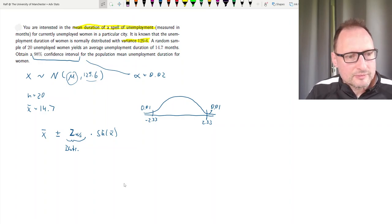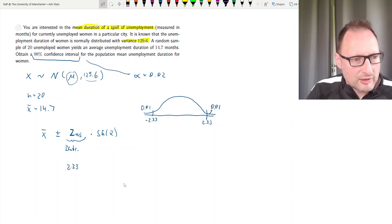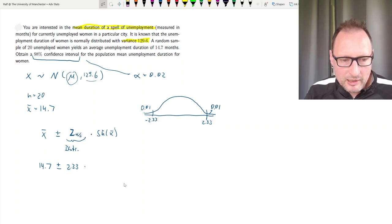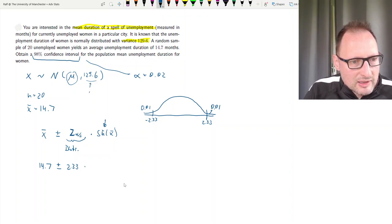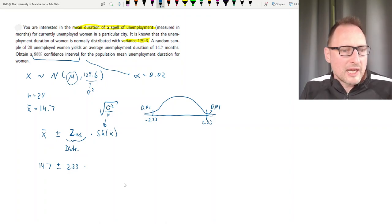So let's write that down already. We already know the sample mean, that is 14.7 plus minus 2.33. So what about the standard error of X bar? Well, the standard error of X bar, we're using knowledge about sampling distributions. If this is the population variance, then it's the square root of the population variance divided by n. As we have the population variance, we use that.